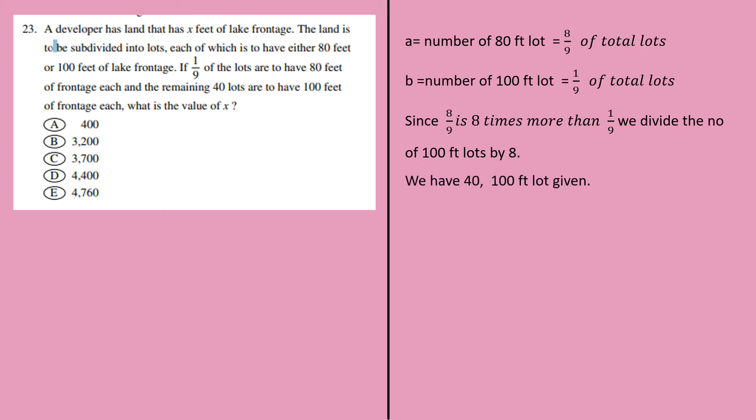If I want to find what A is, A is number of 100-feet lots divided by 8, which is 40 divided by 8, which is 5. So my B is 40, A is 5. So when I substitute this, 80A plus 100B gives me 80 times 5 plus 100 times 40, which is 4,400. Option is D.